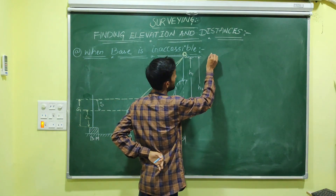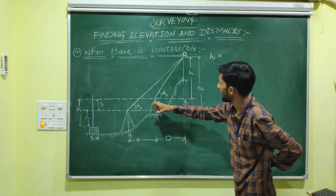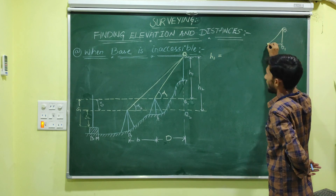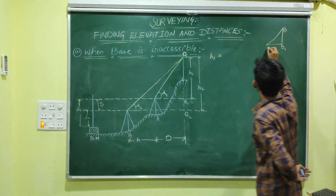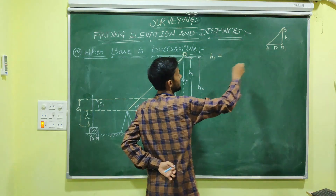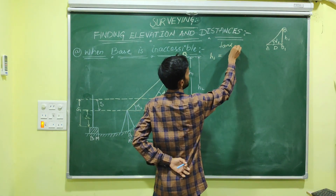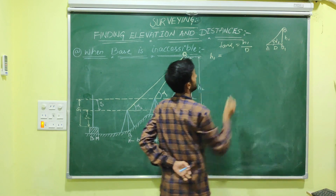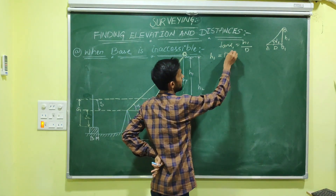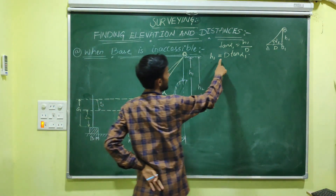First, what is H1? From the triangle Q, Q1, and A — H1 is the vertical height and D is the horizontal distance, and the angle is alpha 1. So tan(alpha 1) equals opposite over adjacent, that is H1 over D. Therefore H1 equals D·tan(alpha 1). That is the formula for H1.